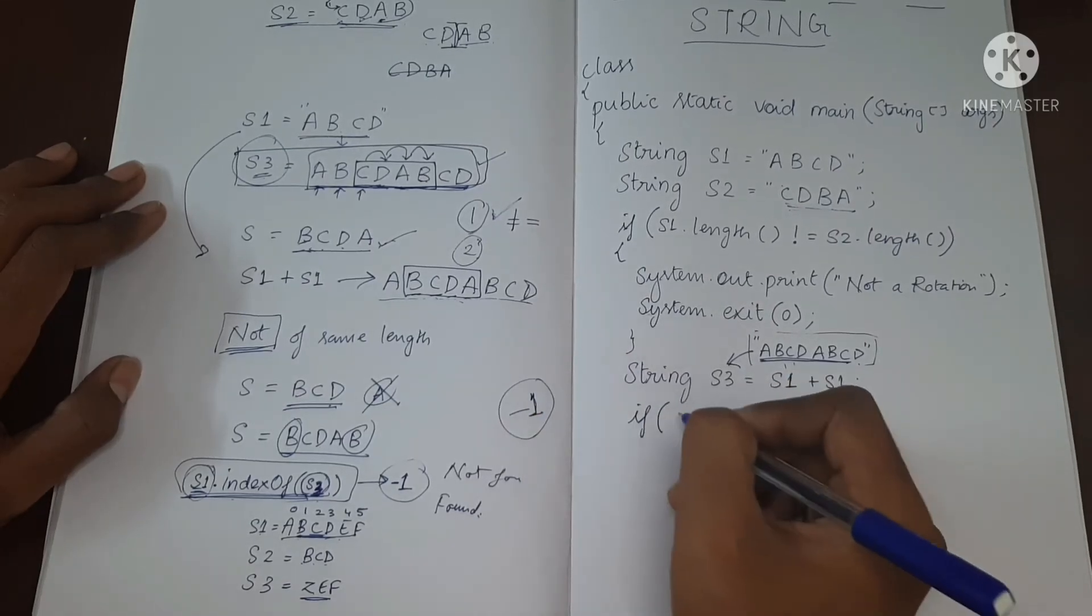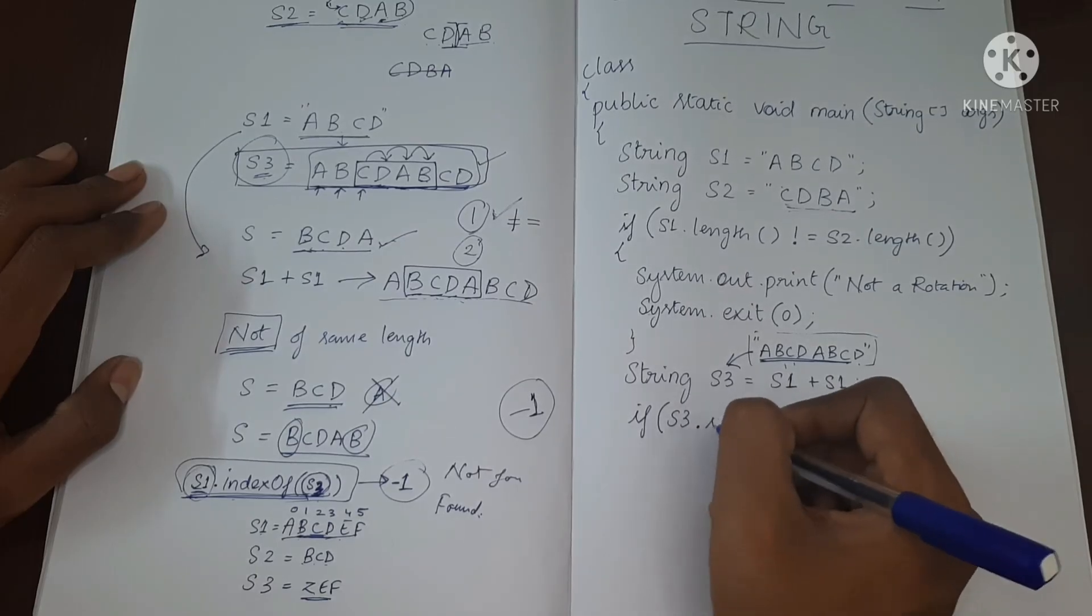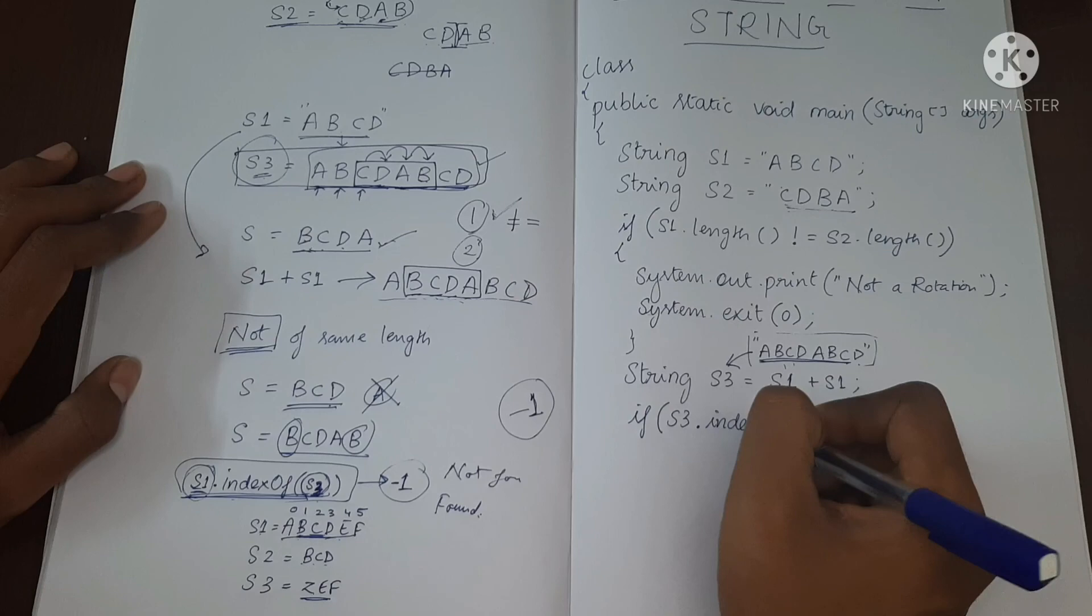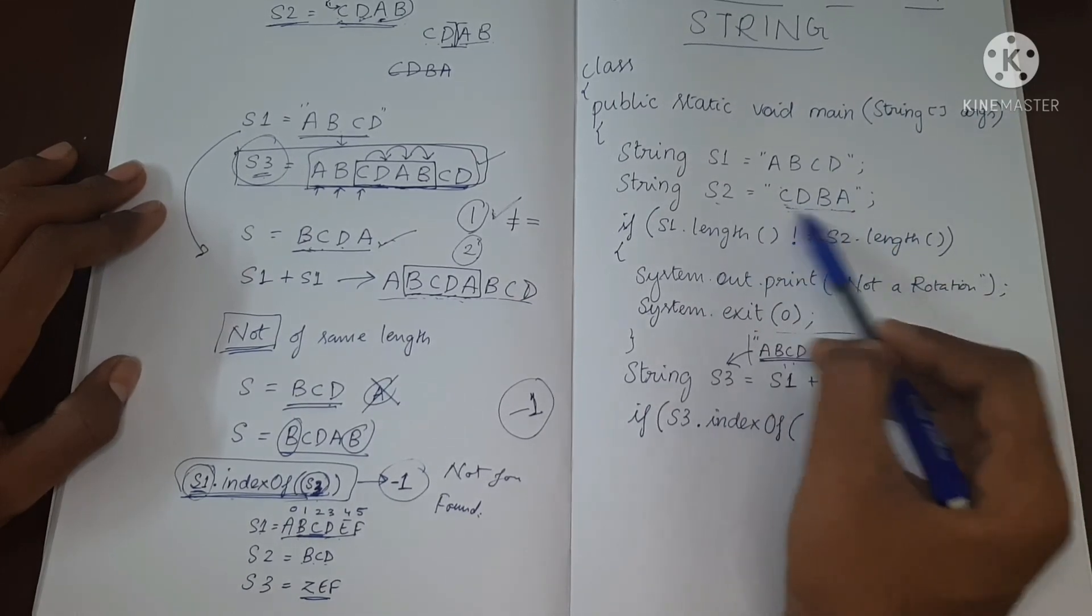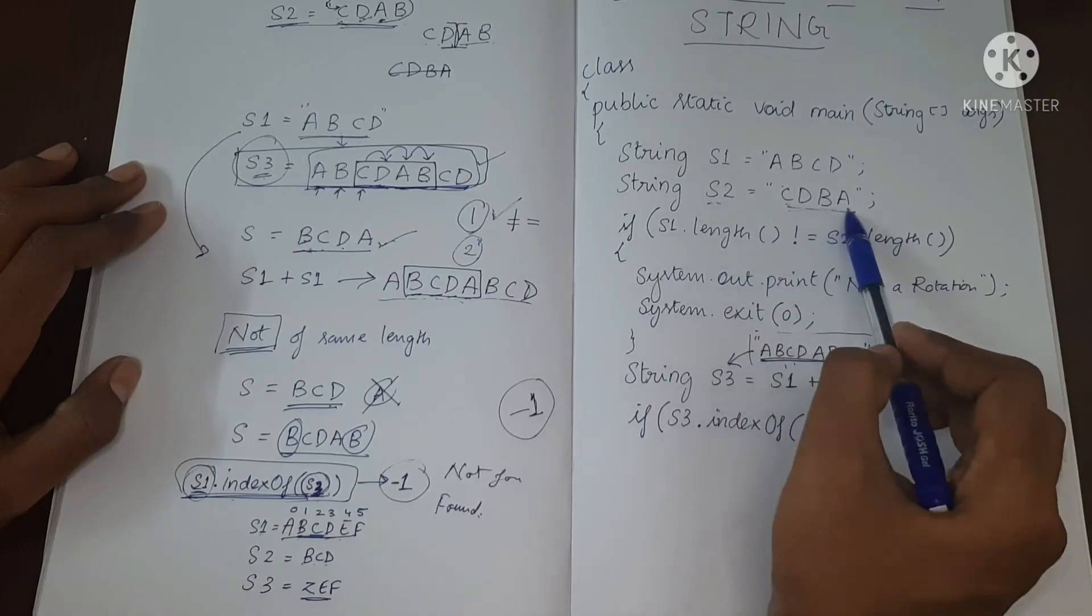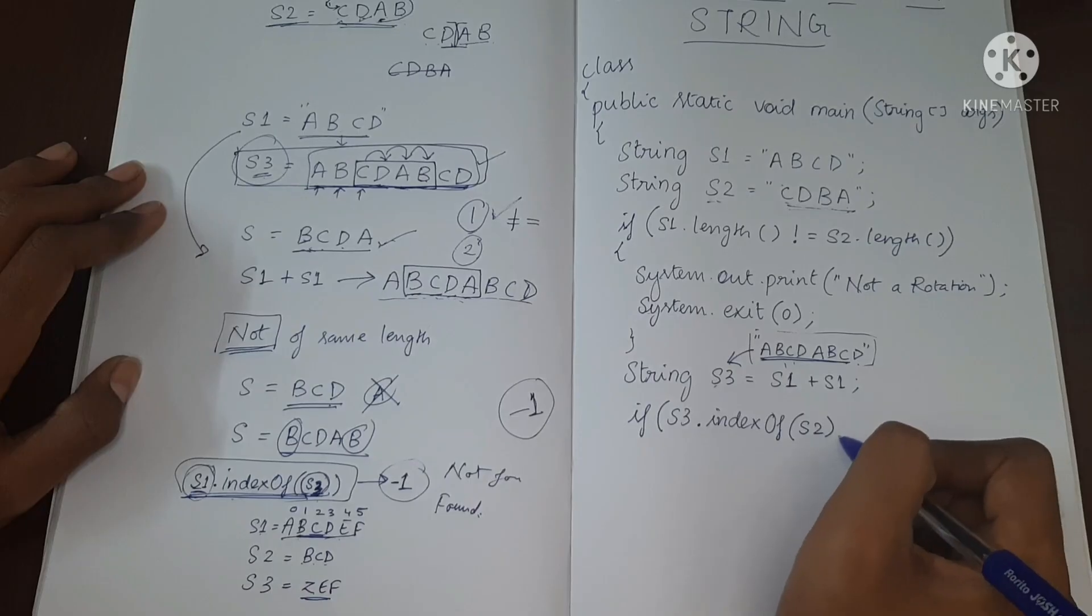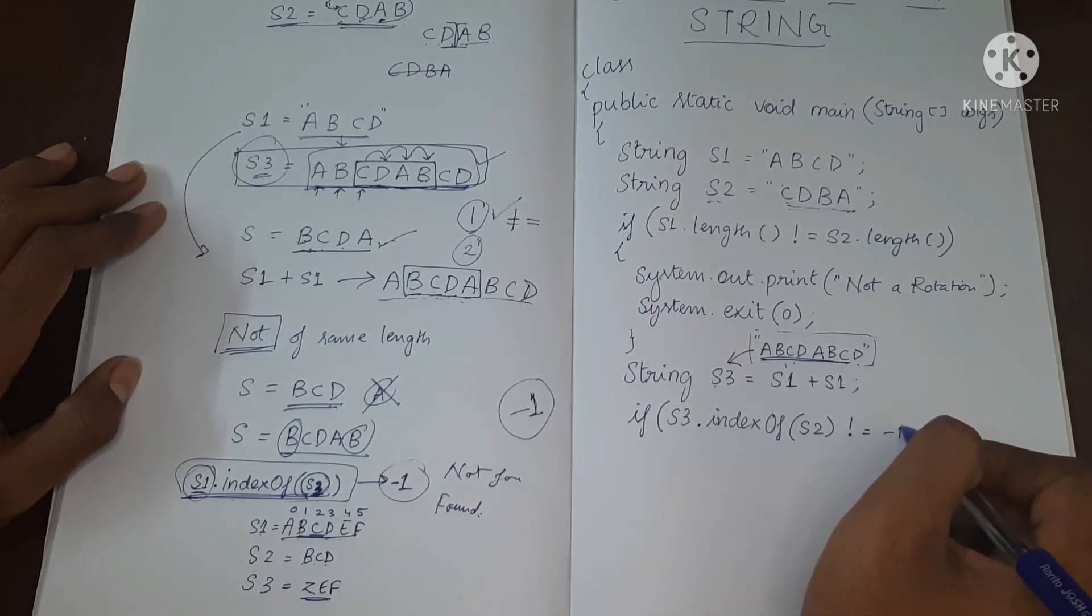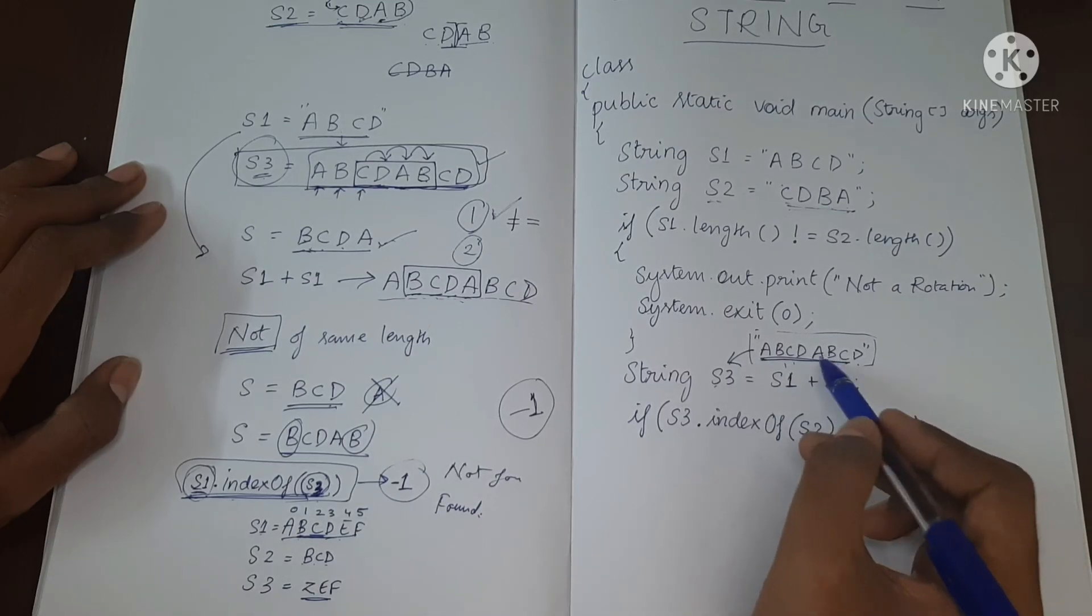Okay, so I will do if S3.indexOf(S2). We are interested in searching S2 in S3. So S2 is not equal to minus one. If it is not equal to minus one, it means S2 is present in S3. So if it is present, what does that mean? It means it is a rotation. So let me just print it.